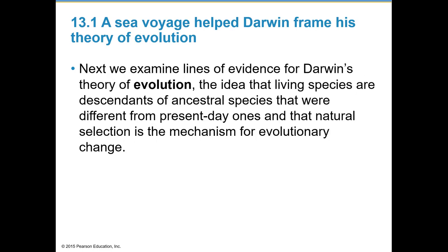Next we'll look at lines of evidence for Darwin's theory of evolution — the idea that living species are descendants of ancestral species that were different from present-day ones, and that natural selection is the mechanism for evolutionary change.